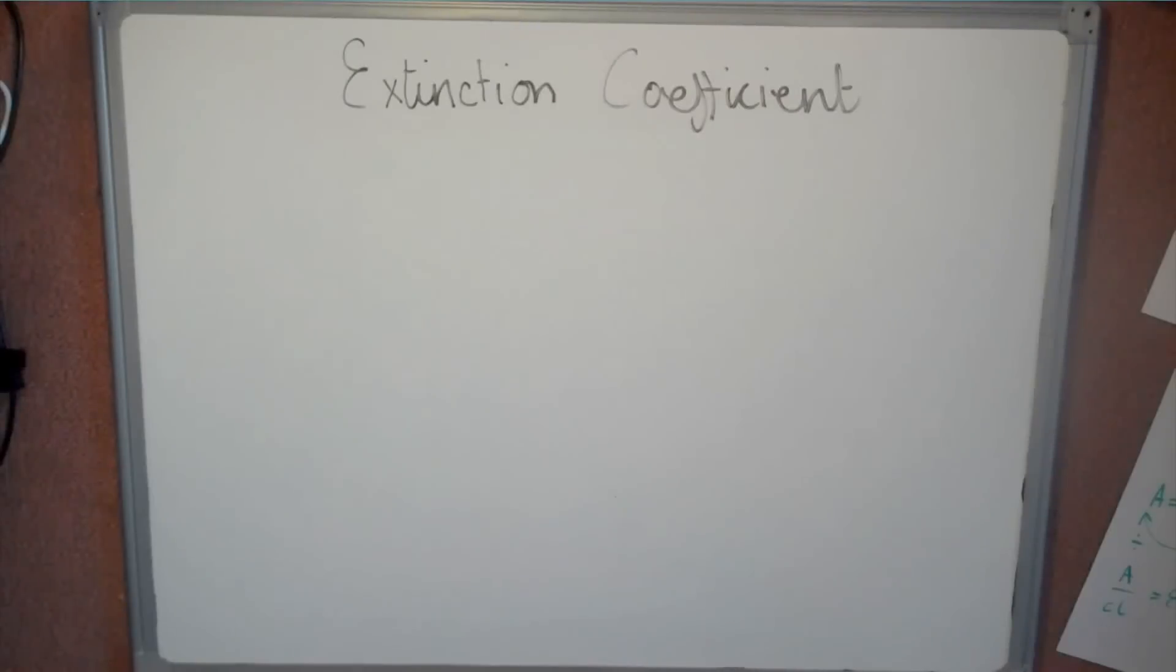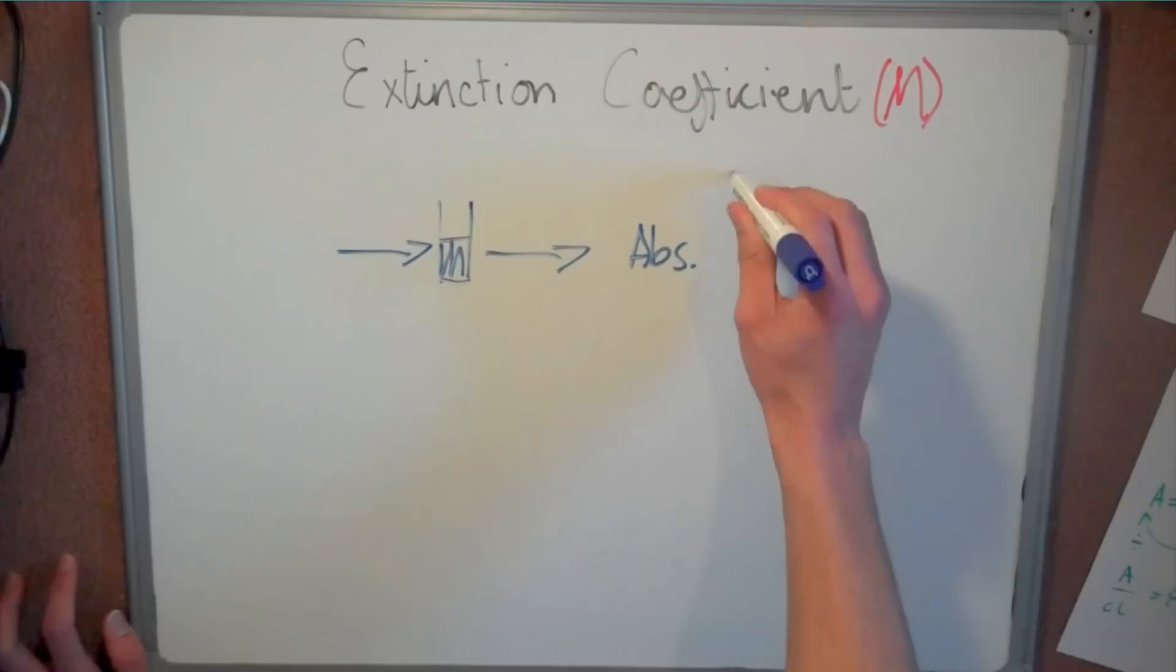To find the molar extinction coefficient for a compound in solution, we use a spectral photometer to measure the absorbances of the compound at many different concentrations.